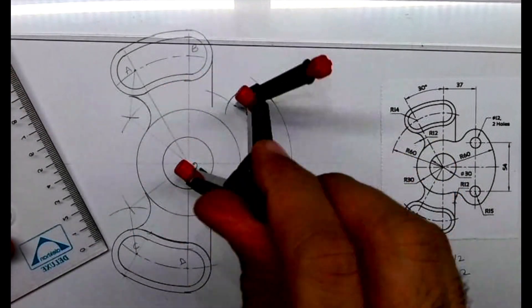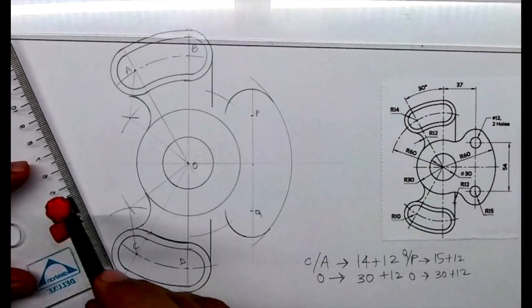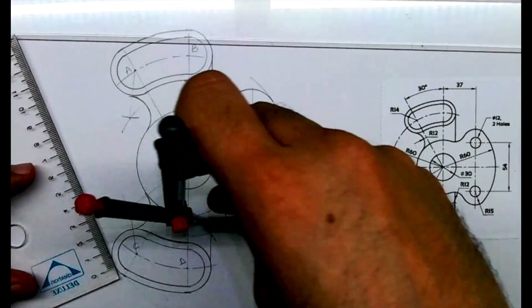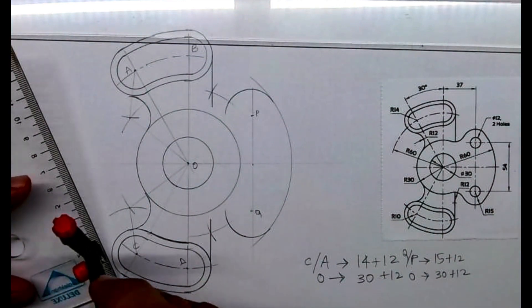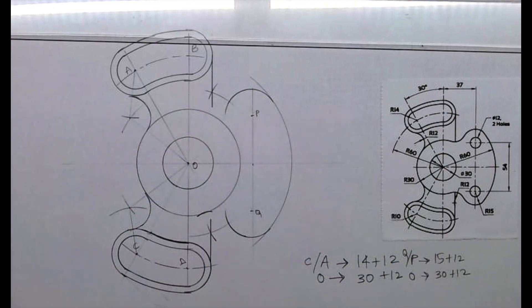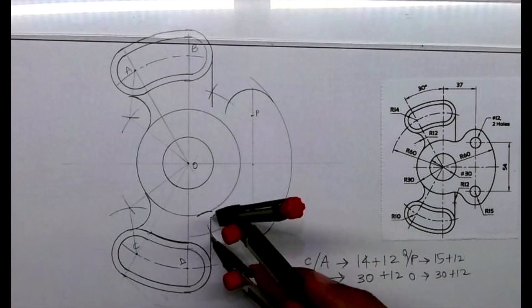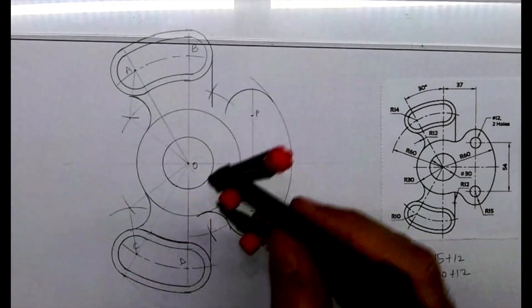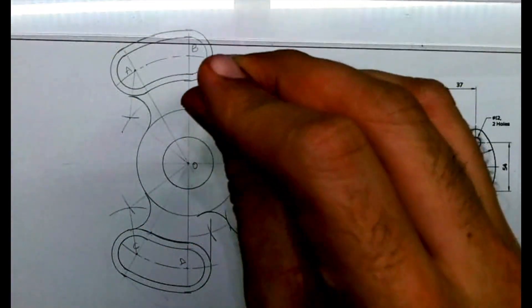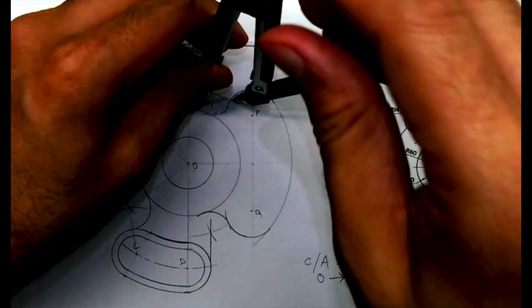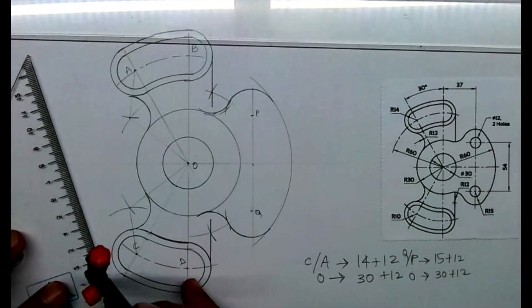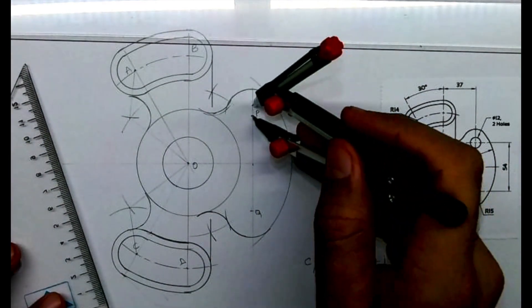We can draw radius 12 like this and from here. Then we will draw radius 6 from P and Q.